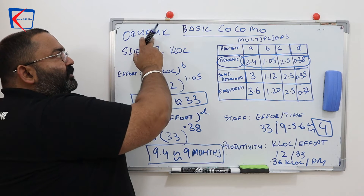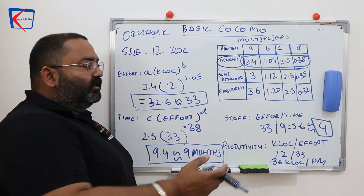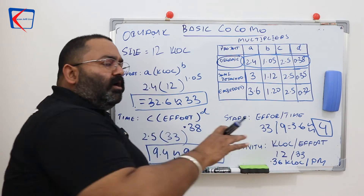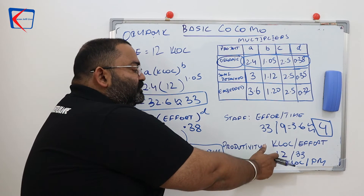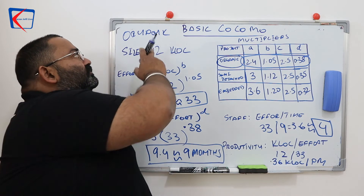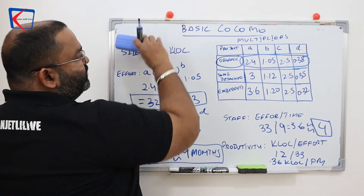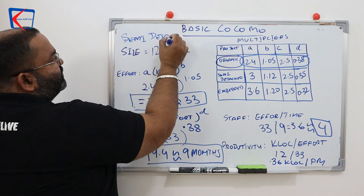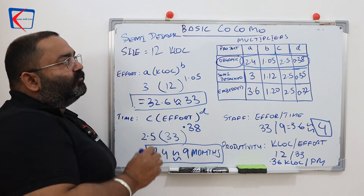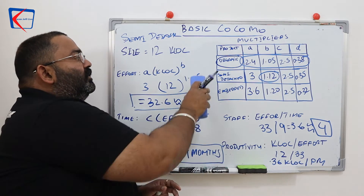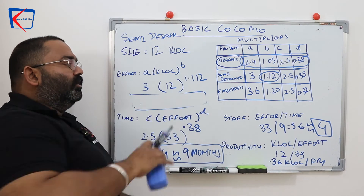To summarize the organic project with 12 KLOC: effort is 33 person-months, time is 9 months, staff is approximately 4 people, and productivity is 0.36 KLOC per month. If the same project were semi-detached, A becomes 3 and B becomes 1.12, and we recalculate accordingly.